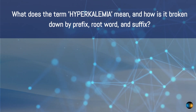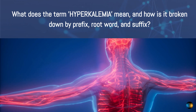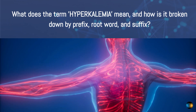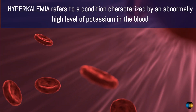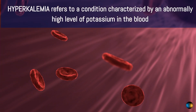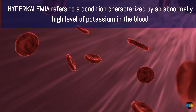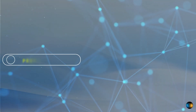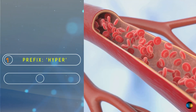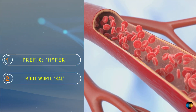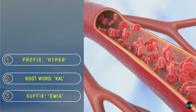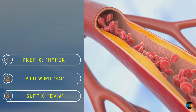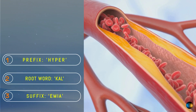What does the term hyperkalemia mean, and how is it broken down by prefix, root word, and suffix? Hyperkalemia refers to a condition characterized by an abnormally high level of potassium in the blood. It can be broken down into three parts: the prefix hyper, meaning above normal; the root word kal, meaning potassium; and the suffix emia, indicating a condition related to the blood.